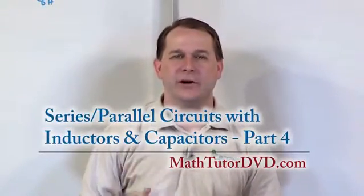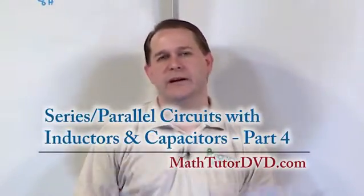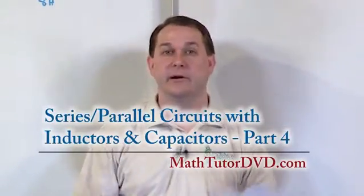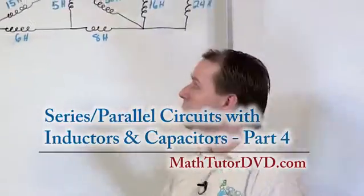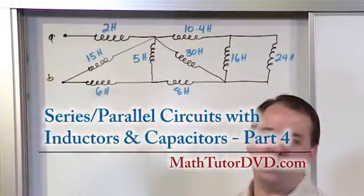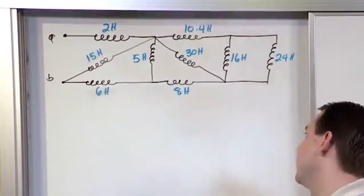Hello, welcome to this section of circuit analysis. Here we're going to continue getting practice reducing inductor type circuits using series parallel arrangements. We have this problem on the board here. We have terminals A and B. We would like to find out what would be the equivalent inductance of this network of inductors.